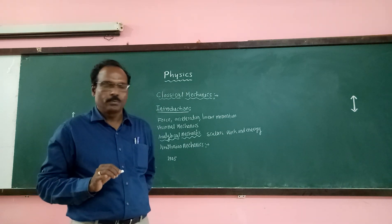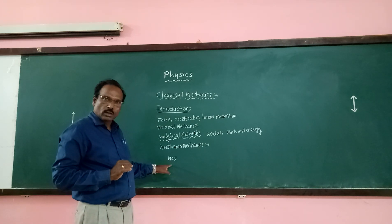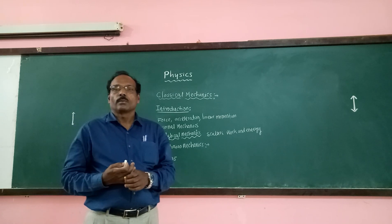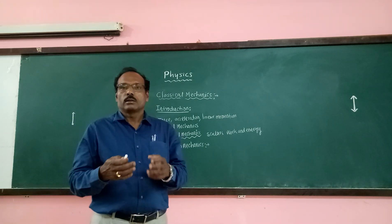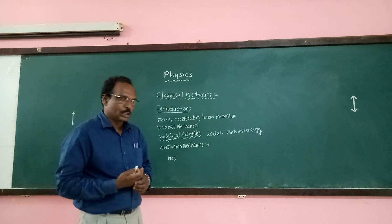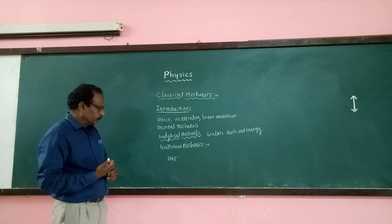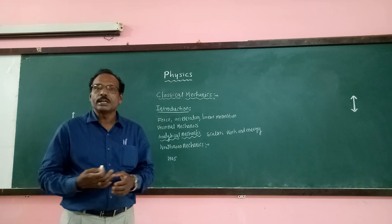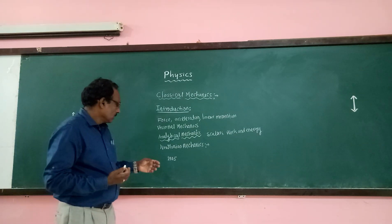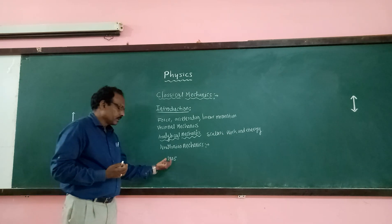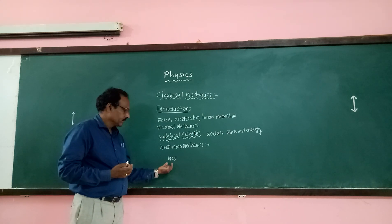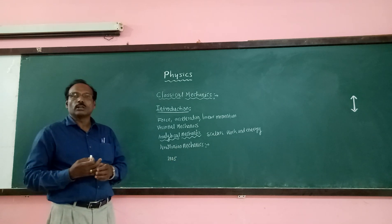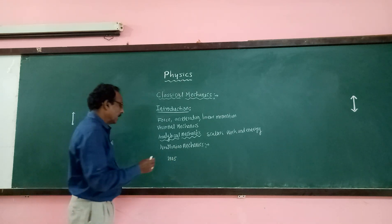In the year 1905, Einstein proposed his special theory of relativity. He established the constancy of the velocity of light in vacuum. According to the special theory of relativity, the speed of light in vacuum is found both theoretically and experimentally to be constant.